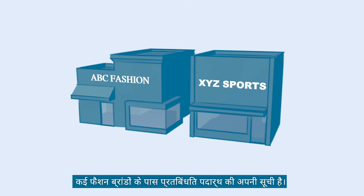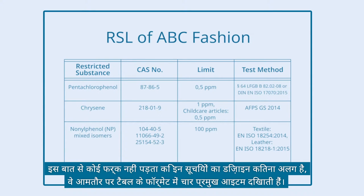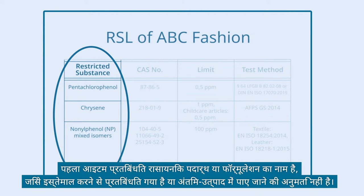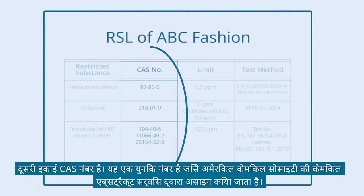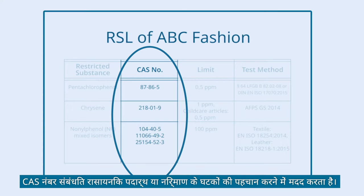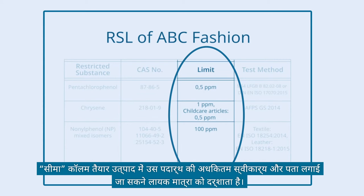Many fashion brands have their own restricted substance list. No matter how different the design of these lists is, they usually show four key items in a table format. The first item is the name of the restricted chemical substance or formulation that is restricted in use or not allowed to be detected in the end product. The second item is the CAS number — a unique number assigned by the Chemical Abstracts Service of the American Chemical Society, which helps identify the respective chemical substance or components of the formulation.